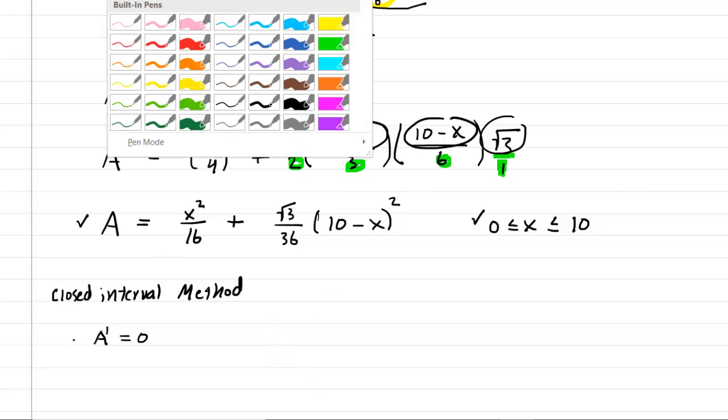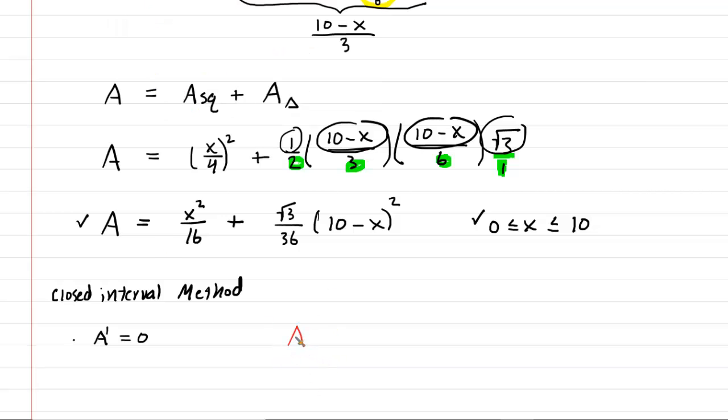Here we go. We're going to find A prime. And notice when we do the derivative of x squared over 16, you might want to think of that as 1/16 x squared, because that makes taking the derivative a little easier. You would multiply the 2 by 1/16, which would give you 2/16, which reduces to 1/8. And then you would have x to the power of 1, because you have to subtract 1 from the power.